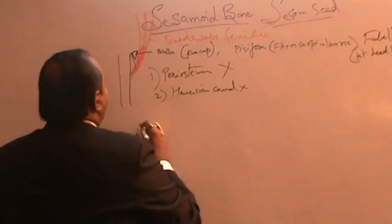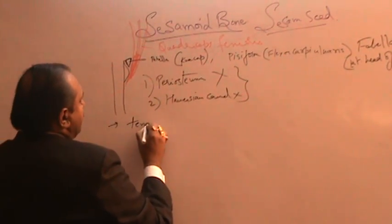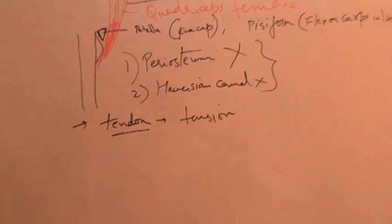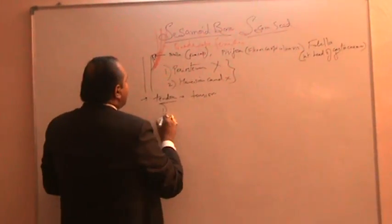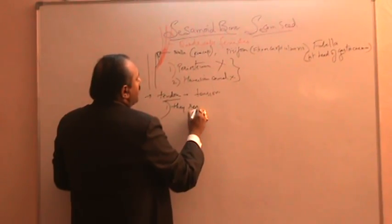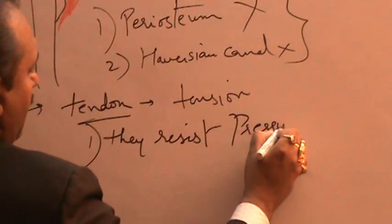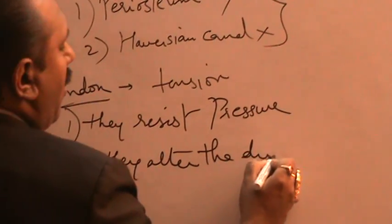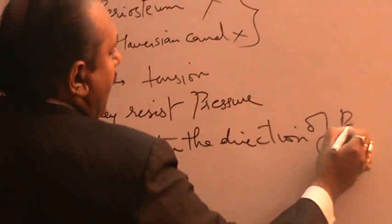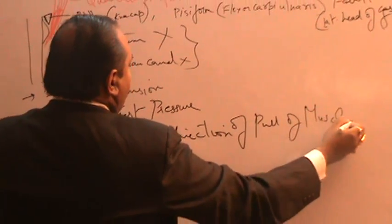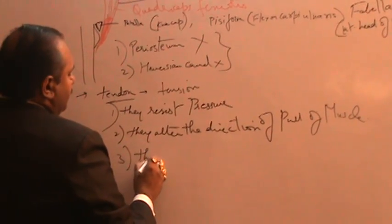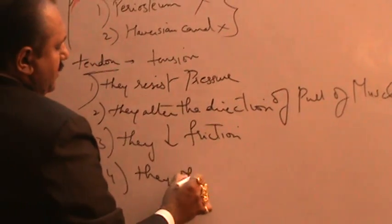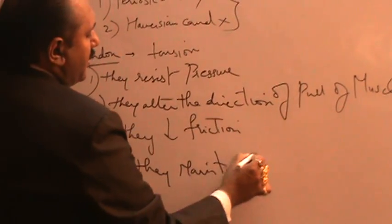These are bony nodules which develop in the tendons of muscles subjected to more stress, strain, and tension. The sesamoid bones firstly resist the pressure, they alter the direction of the pull of the muscles, they decrease the friction, and they maintain the local circulation.